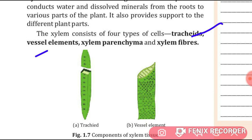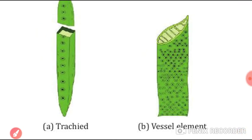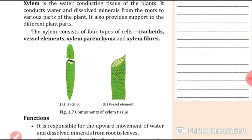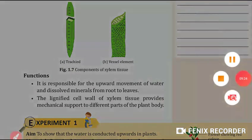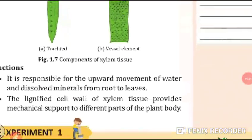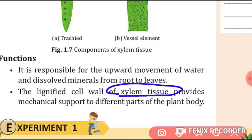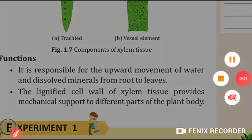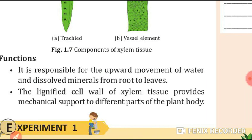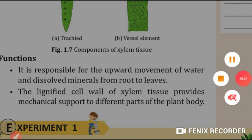Xylem consists of four types of cells: tracheids, vessel elements, xylem parenchyma, and xylem fibers. This diagram shows tracheids and vessel elements. The functions of xylem tissue include: the upward movement of water and dissolved minerals from roots to leaves, and the lignified cell wall of xylem tissue provides mechanical support to different parts of the plant. We will continue in the next video — till then, stay safe and wash your hands thoroughly with soap and water. Thank you.